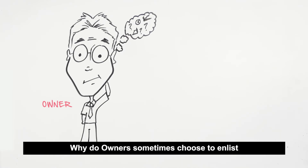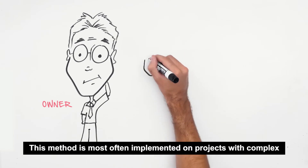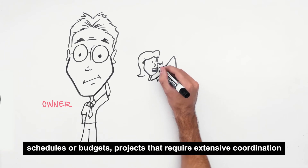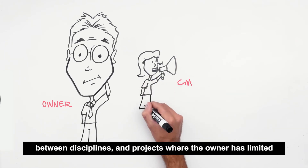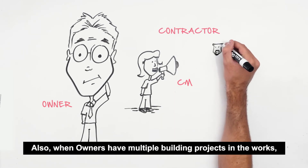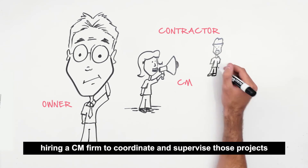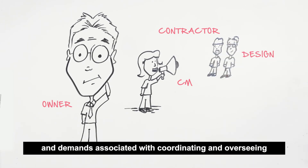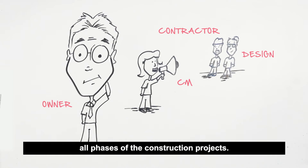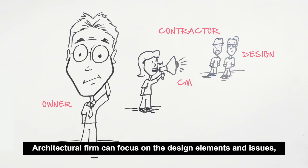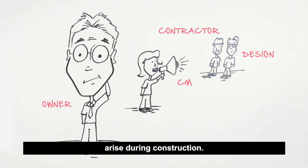Why do owners sometimes choose to enlist a construction management firm? This method is most often implemented on projects with complex schedules or budgets, projects that require extensive coordination between disciplines, and projects where the owner has limited expertise with regard to design and construction. Also, when owners have multiple building projects underway, hiring a CM firm to coordinate and supervise those projects can be an efficient and effective way to manage the complexity. Some owners also prefer using a CM firm so that the architectural firm can focus on design elements, leaving the CM firm to handle issues that arise during construction.